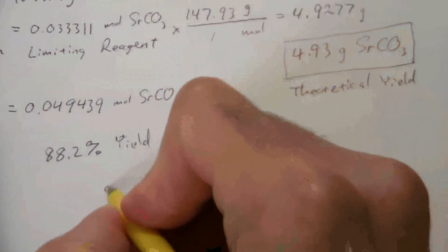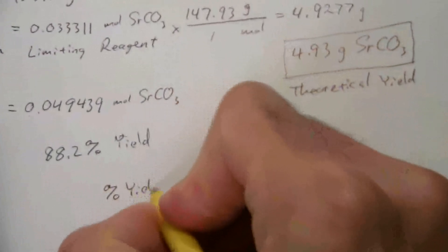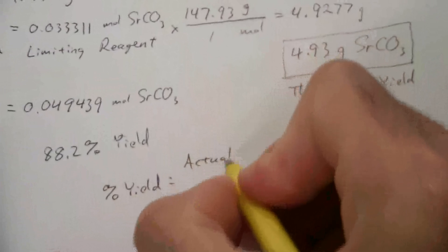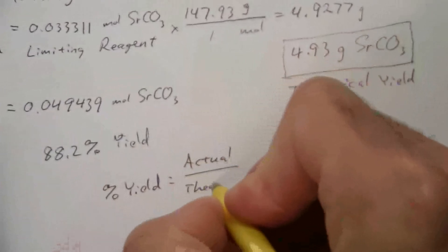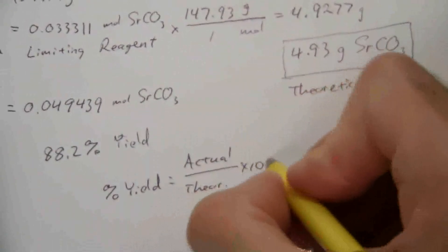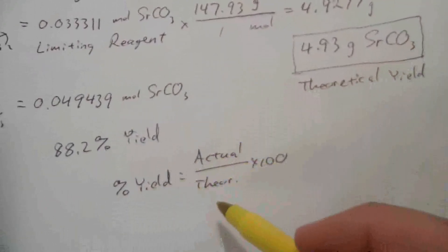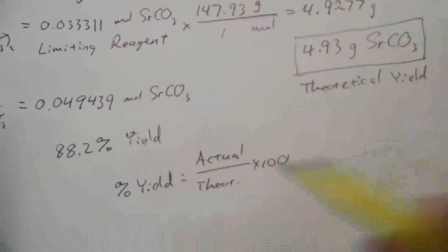We know that the percent yield is the actual divided by the theoretical times 100%. So, as long as I have two of these three, I can solve for the third one.